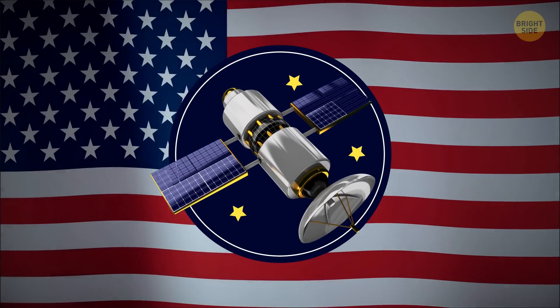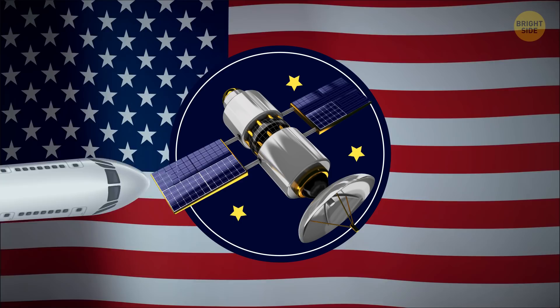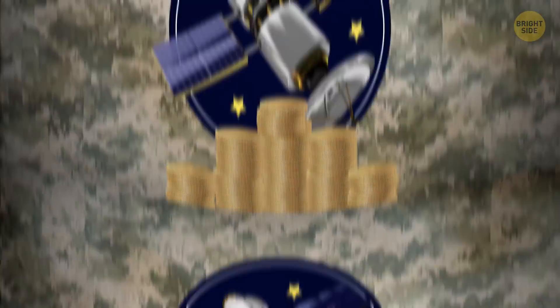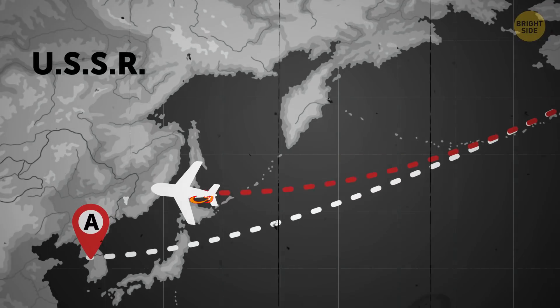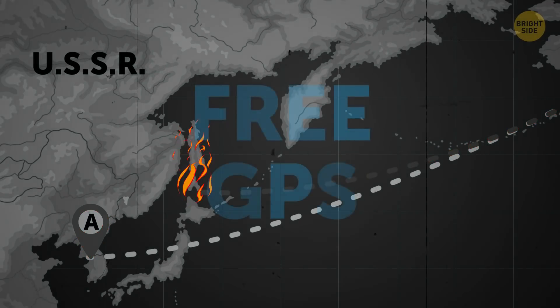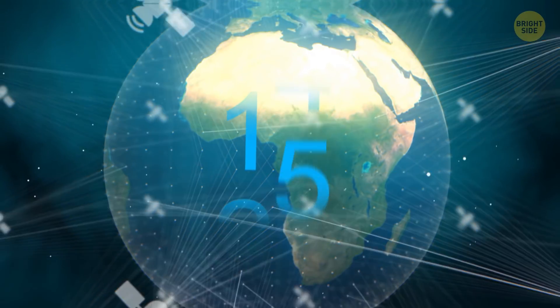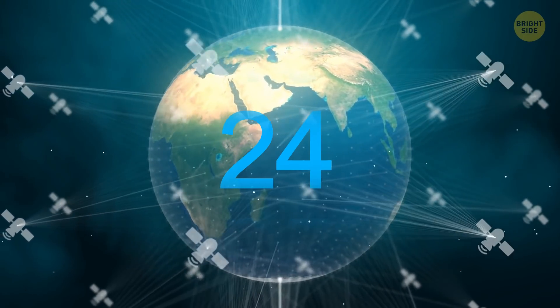The US government had considered making GPS technology available to the public. The Department of Defense had proposed selling GPS access to various airlines. However, in the wake of a plane crash in 1983, they decided to make GPS access freely available to anyone with the equipment to use it. The government also made plans to increase the number of GPS satellites from 15 to 24.